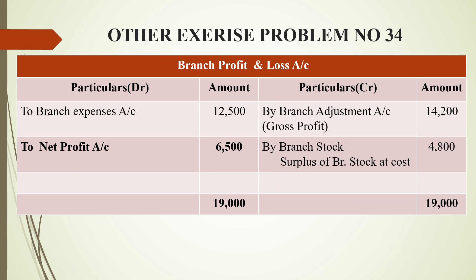Branch profit and loss account: On the credit side — gross profit brought down from branch adjustment account: 14,200 rupees; surplus of stock (credit side, as it comes inside the business): 1,200 rupees. On the debit side — branch expenses: 12,500 rupees. The balancing figure on the debit side is net profit: 6,500 rupees. Grand total on both sides: 19,000 rupees.